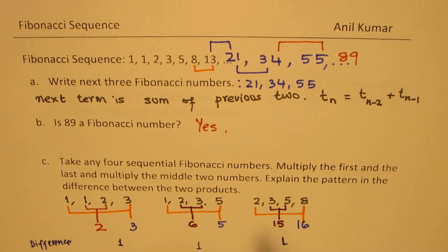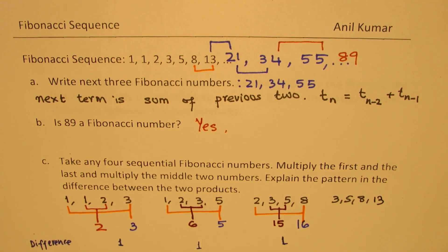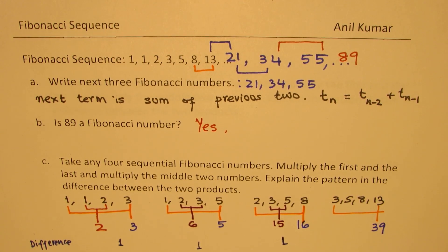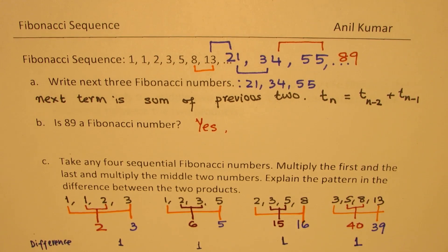I hope you are getting the pattern. Let's confirm with one more example: 3, 5, 8, 13. The product of outer numbers is 3 times 13, which is 39. The inner numbers, 5 times 8, give 40. The difference is still 1. However, now the inside number is greater.